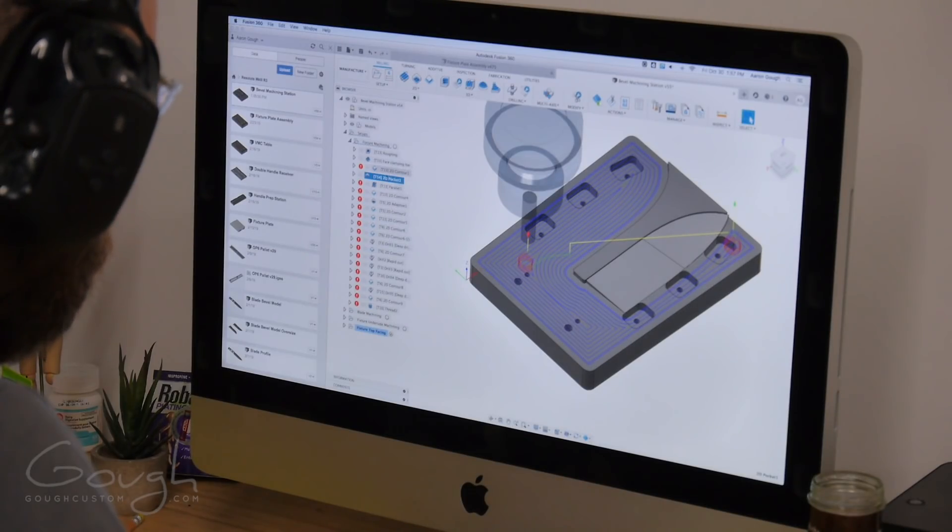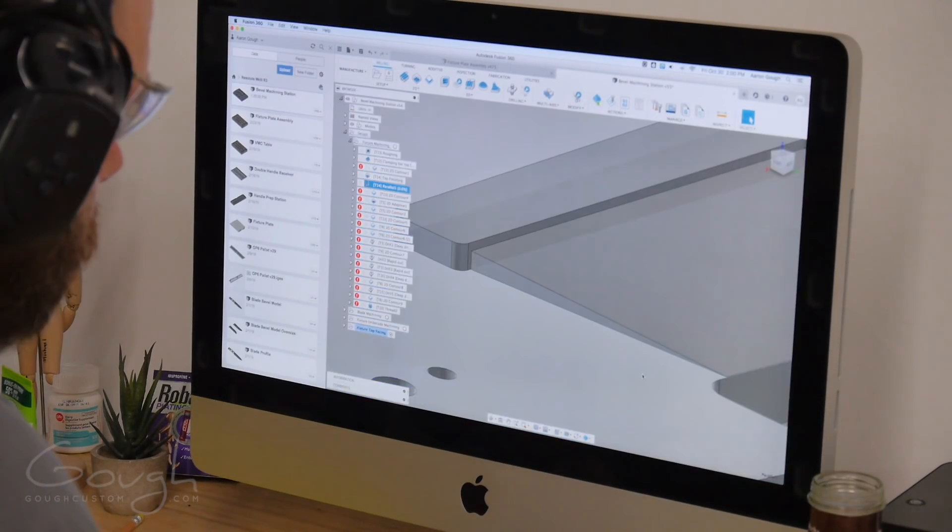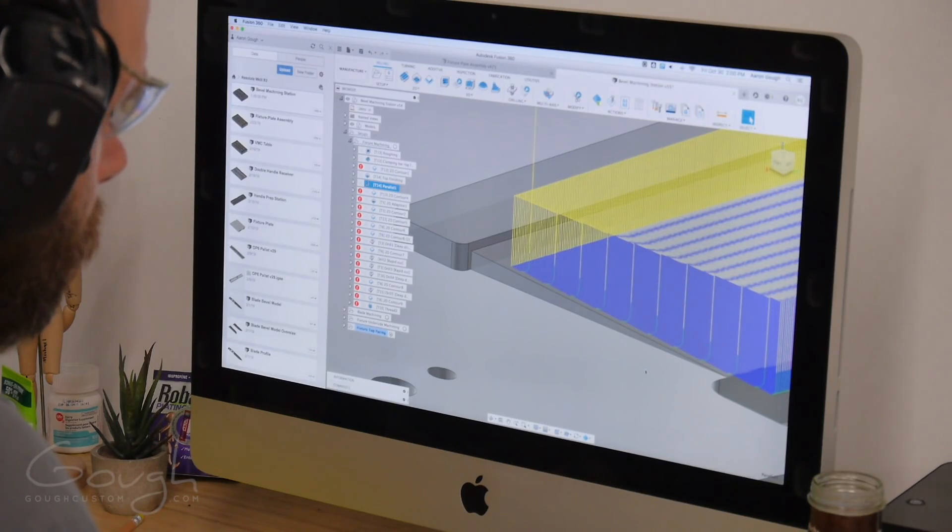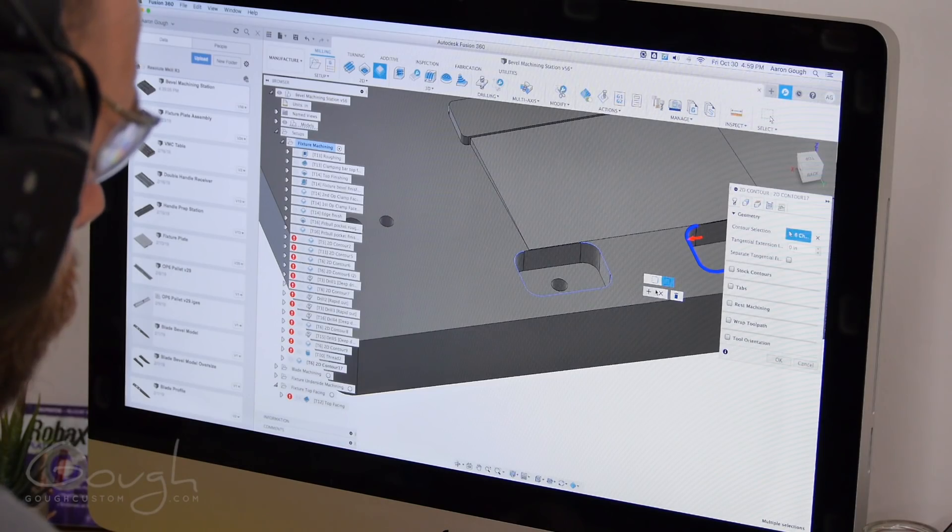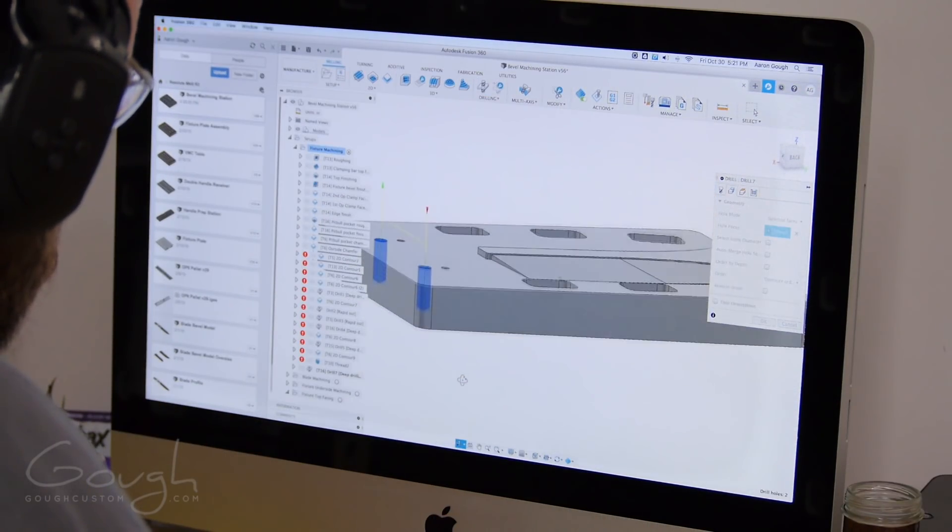To create the toolpaths you have to go through and pick out each individual feature in the CAD drawing and then choose what kind of operation you'd like to apply to them. There's lots of parameters to change but once all the parameters are entered the CAM program automatically creates the final toolpath.